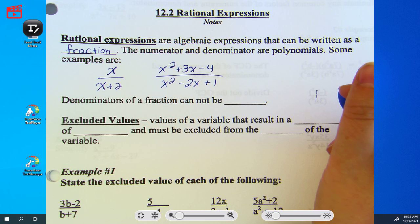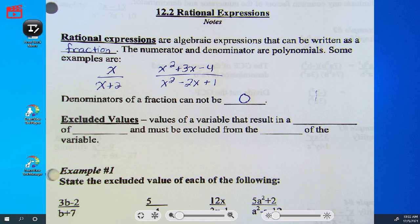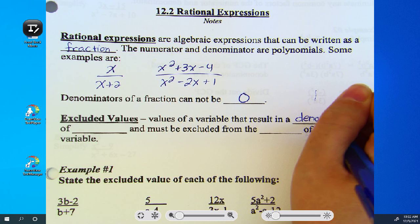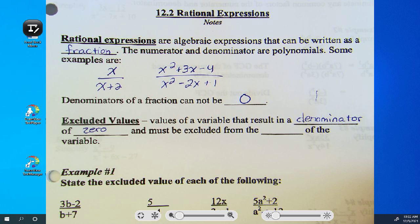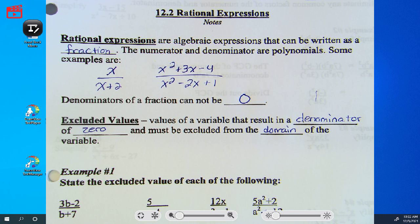Denominators of a fraction cannot be. What is the one number we cannot divide by? Zero. Zero. Denominators of a fraction cannot be zero. Excluded values are values of a variable that result in a denominator of zero and must be excluded from the domain of the variable. Meaning excluded values are numbers that the variable cannot be because if they are those numbers the denominator will be zero and it will be undefined. So we're going to learn how to find them so you understand where they're coming from but nine times out of ten they give it to you.